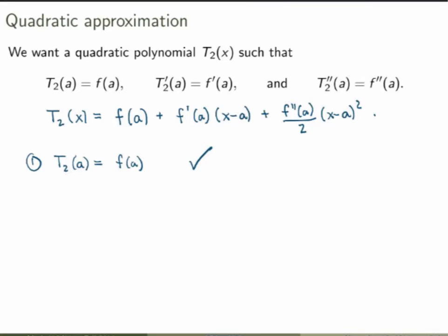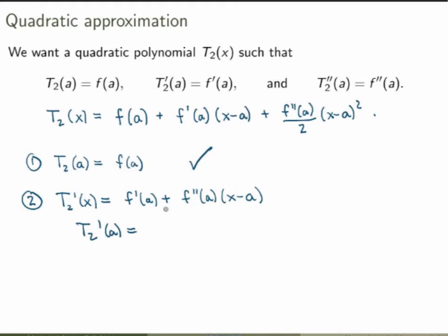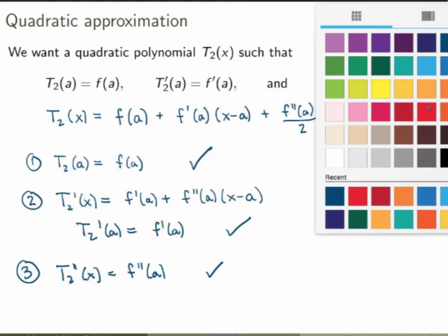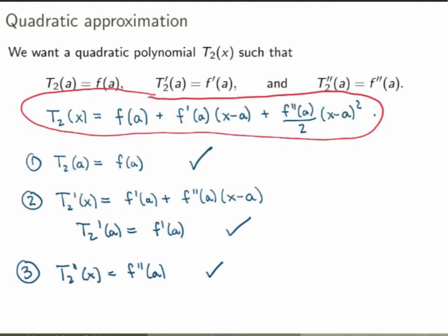Let's prove that this satisfies all three constraints. First, t2 of a should equal f of a. If we replace x with a, the second and third terms vanish, leaving just f of a. Check. For the second condition, we take the first derivative of t2: that gives f prime of a plus f double prime of a times (x minus a). Evaluating at x equals a, the second term vanishes, leaving f prime of a. Check. For the third condition, the second derivative of t2 is just f double prime of a. Check. So this is the degree 2 Taylor polynomial.